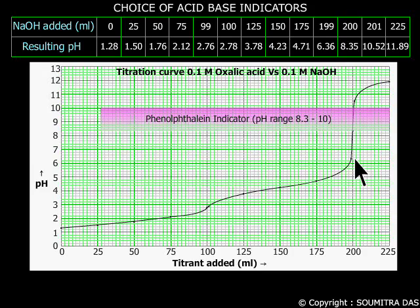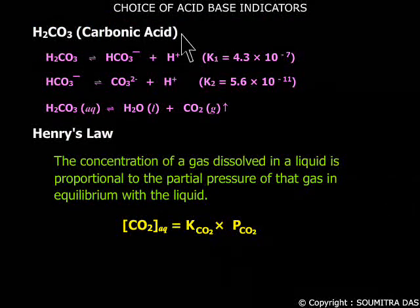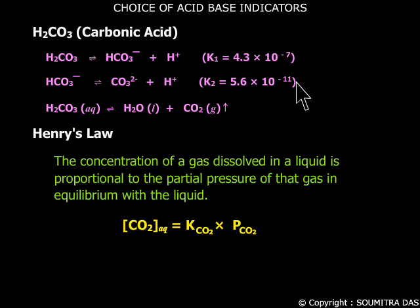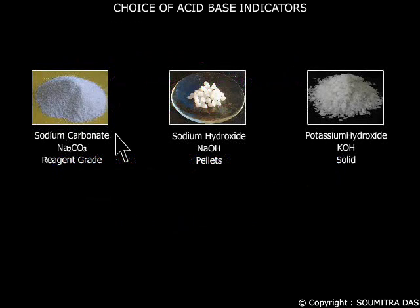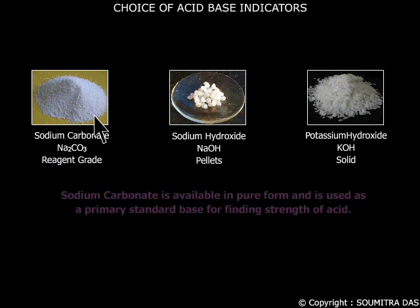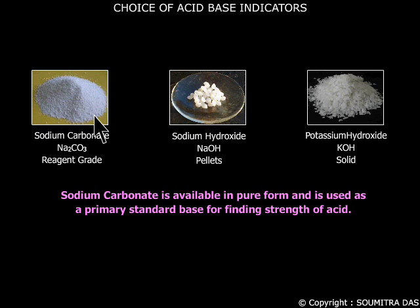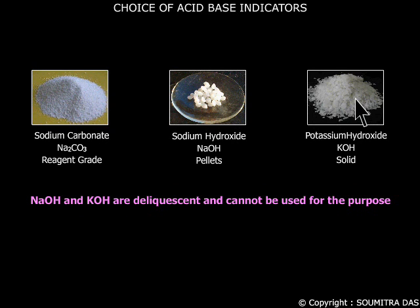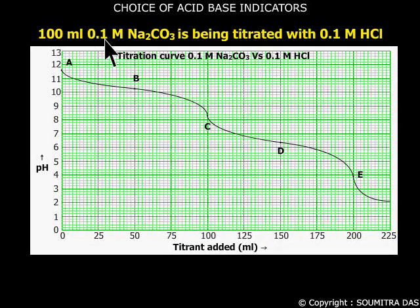Now let us discuss another diprotic acid, namely carbonic acid. This acid has very low dissociation constants and also limited solubility. Most of it remains as gaseous CO₂ and the solubility in aqueous medium follows Henry's law. The salt of this diprotic acid, sodium carbonate, can be found in solid form, which is easily soluble in water and we can use it as a primary standard base to find the strength of acids by titration. NaOH and KOH are deliquescent and cannot be used for this purpose.